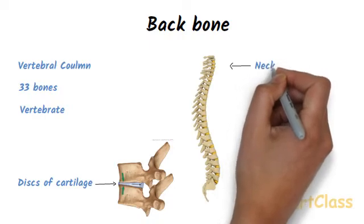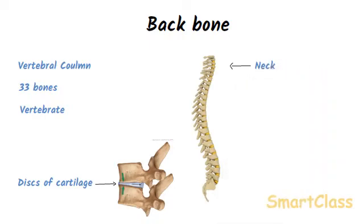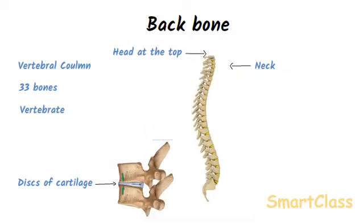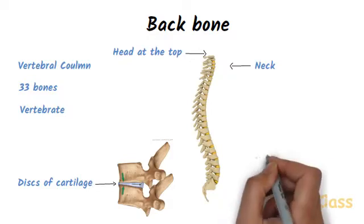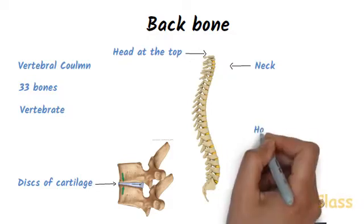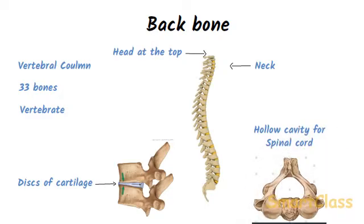The top seven vertebrae of backbone form our neck. Our backbone supports the head at its top. The shoulder bones, rib bones, and hip bones are all joined to the backbone. There is a hollow center inside the backbone through which the spinal cord passes. Thus, the backbone encloses and protects the spinal cord from damage.